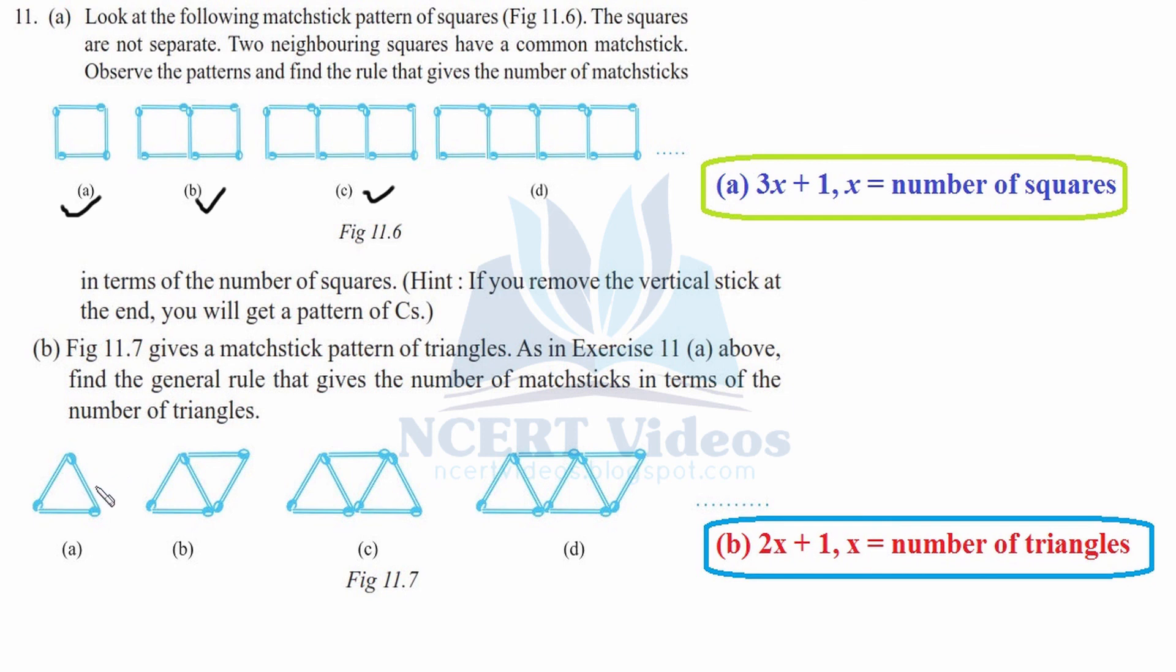When you use it, for pattern A it is 2 times 1 plus 1, which is 3. For the first case, for B we have 2 triangles, which is 4 plus 1 equals 5. You can count them, these are 5. Now here we have 3 triangles, which is 6 plus 1 equals 7. So for the D part, what we have, we have 4 triangles. So it is 8 plus 1 equals 9. You can count them: 1, 2, 3, 4, 5, 6, 7, 8, 9. So this expression that we have framed is true for the given diagram.